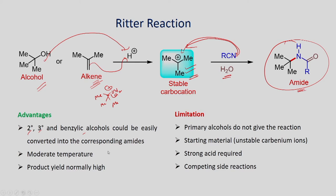The advantages of the Ritter reaction: secondary, tertiary, and benzylic alcohols can be easily converted into corresponding amides by reacting with nitrile. The reaction can be carried out at moderate temperature with good yields. On the other hand, primary alcohols require vigorous reaction conditions and give by-products. So this reaction is best for secondary, tertiary, or benzylic alcohols to get corresponding amides.